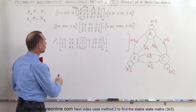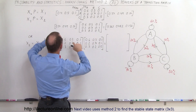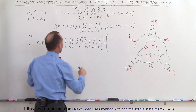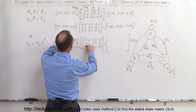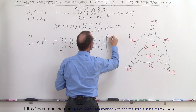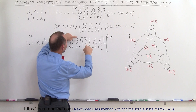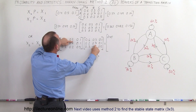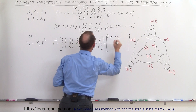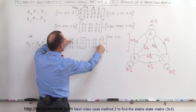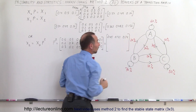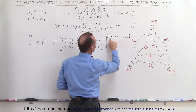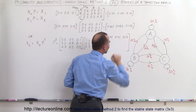First, we multiply the transition matrix by itself. To get the first element of P², we multiply the first row times the first column — that's 0.6×0.6 + 0.3×0.7 + 0.1×0.5 — giving 0.45. Then the first row times the second column gives 0.41, and the first row times the third column gives 0.14. Adding these across: 0.45 + 0.41 + 0.14 equals 1.00, so that checks out.